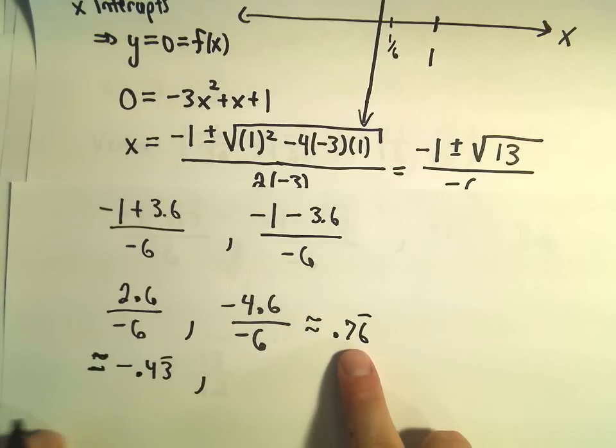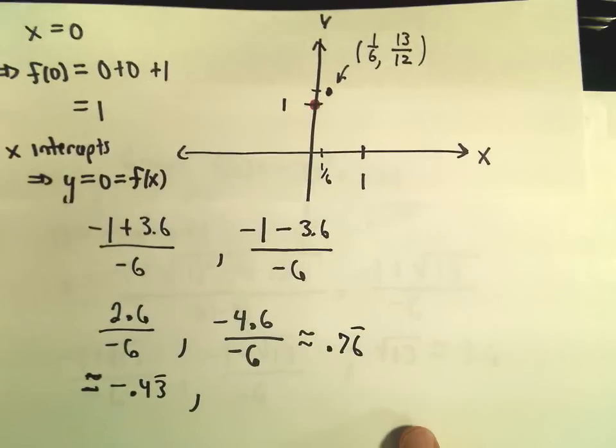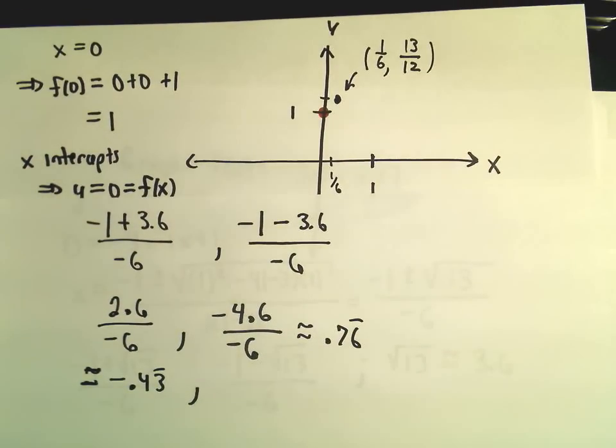So those are going to be our two x-intercepts. So one's a little smaller than 1. The other's in between negative 1 and 0. So at least now I know a little bit better where these points are on the x-axis.